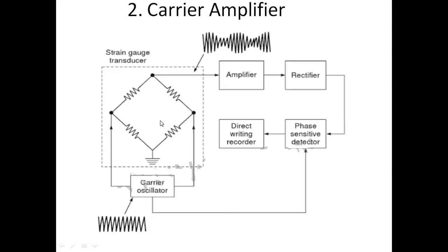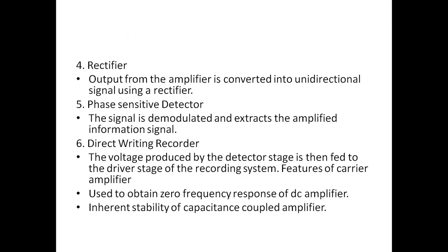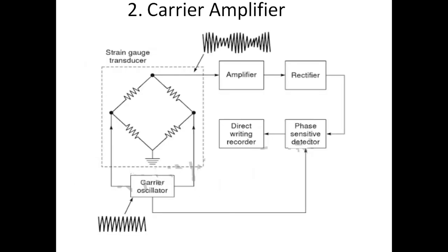The carrier oscillator generates carrier signals. The strain gauge transducer produces modulated signals. The modulation process used here is amplitude modulation. This is a multi-stage capacitance coupled amplifier with three stages of amplification. The signal is then unidirectional. A phase sensitive detector demodulates and extracts the information signal. The voltage produced by the detector stage is then fed to the driver stage of the recording system — the direct writing recorder. This is the complete diagram of the carrier amplifier.